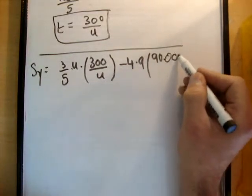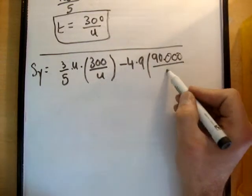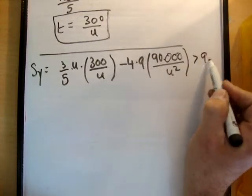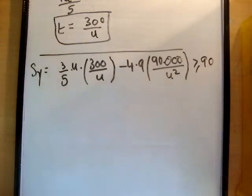And that must be greater than 90 meters, greater than or equal to 90 meters, because we have to square 300. All right, so the next thing we need to do is just solve that equation.